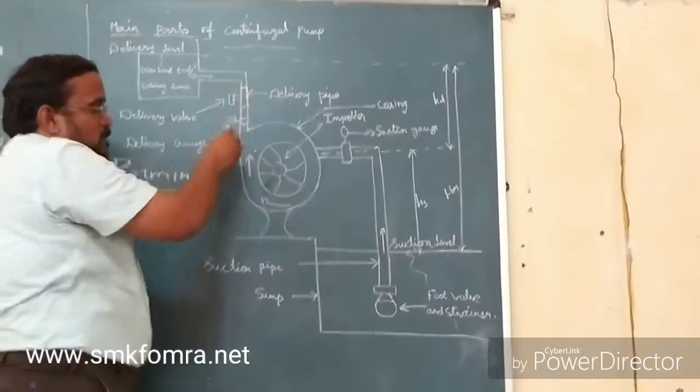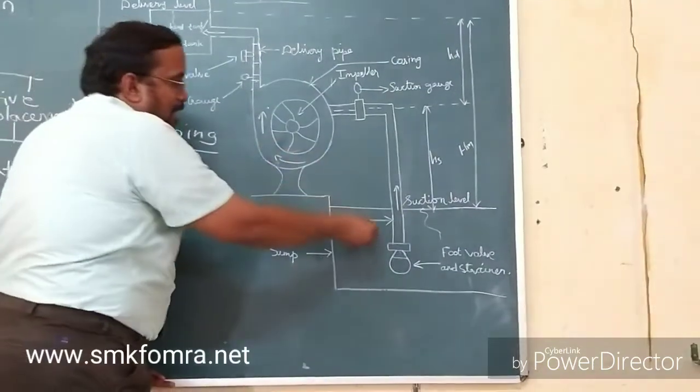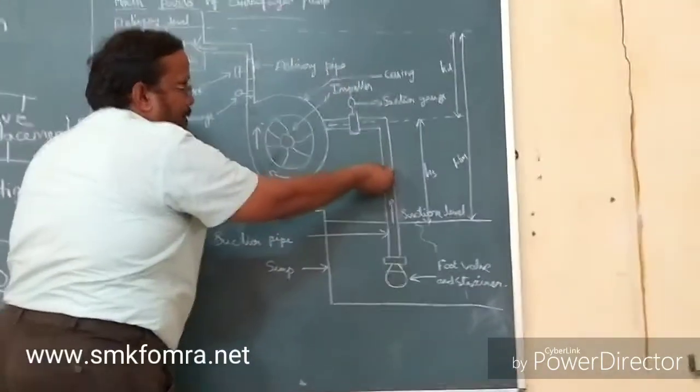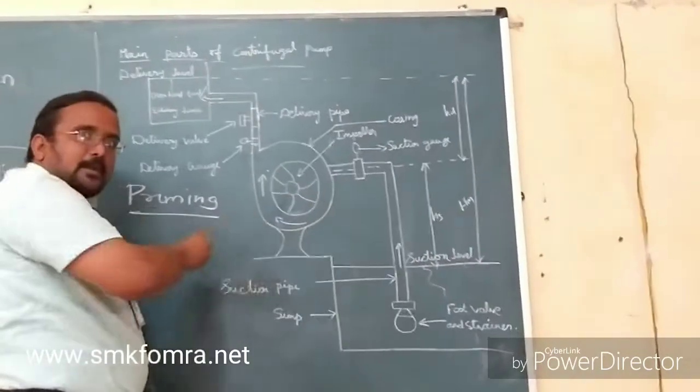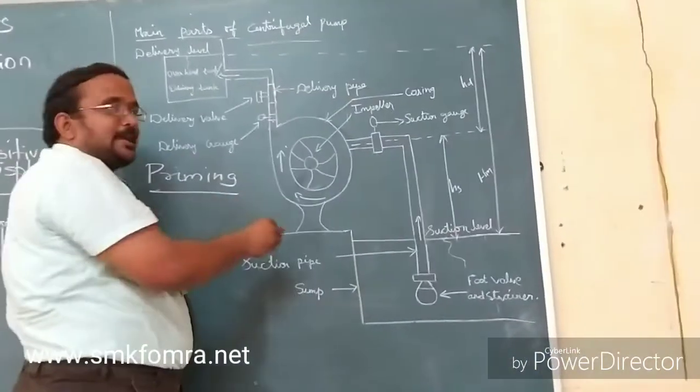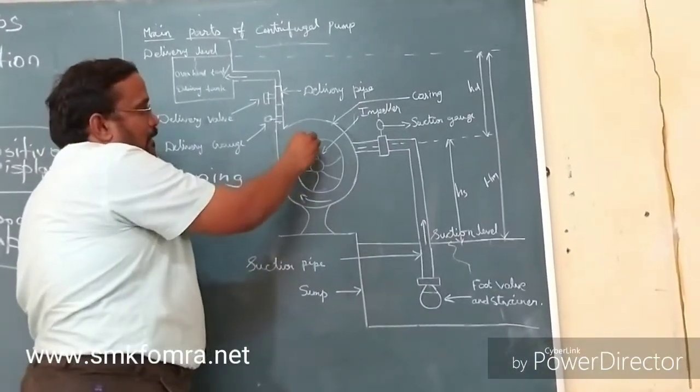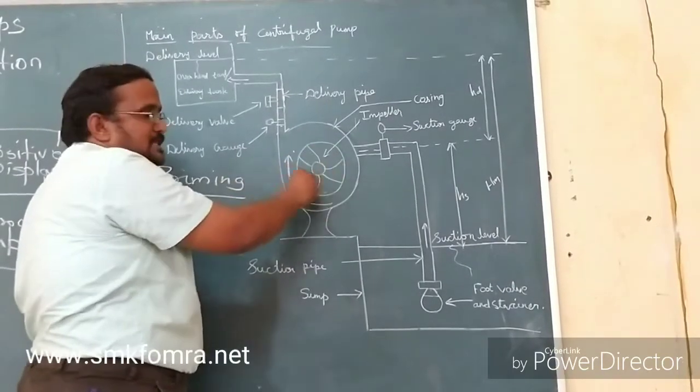When it is opened, the water rises from the suction pipe and comes into the volute chamber casing. When it comes into the casing, the electric motor rotates the impeller.